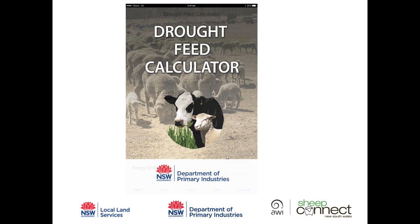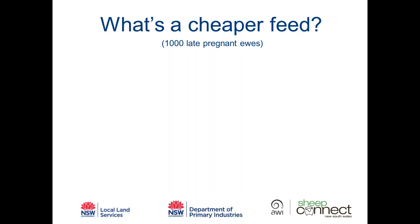The Drought Feed Calculator is a free phone app that you download on your phone. You don't need access to the web once it's on your phone — it's a standalone product. It's downloadable on both Apple and Android devices. Just search 'Drought Feed Calculator' in Google Play or iTunes and you should be able to download it quite easily and for free.